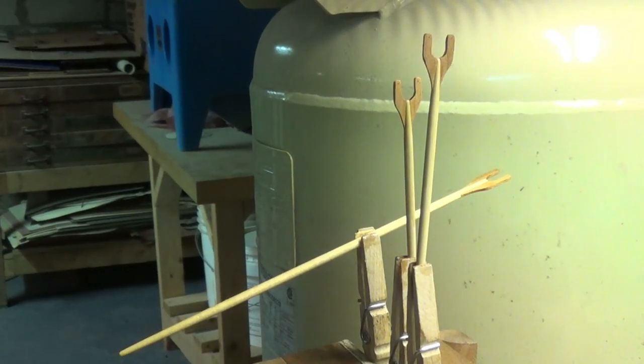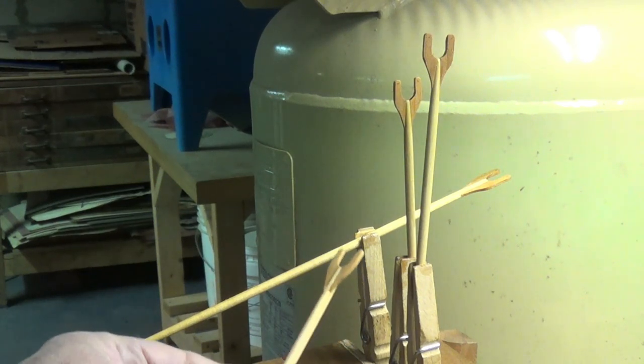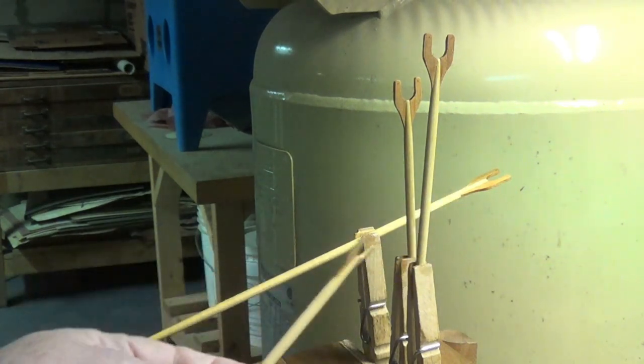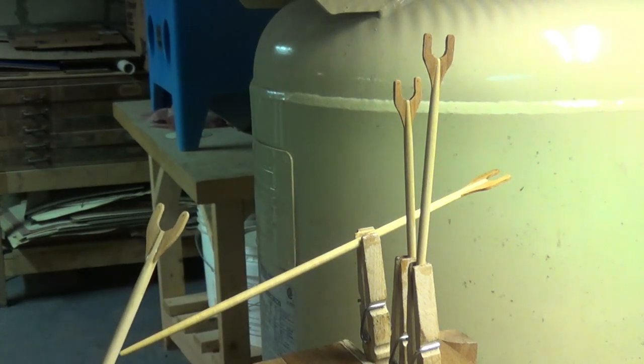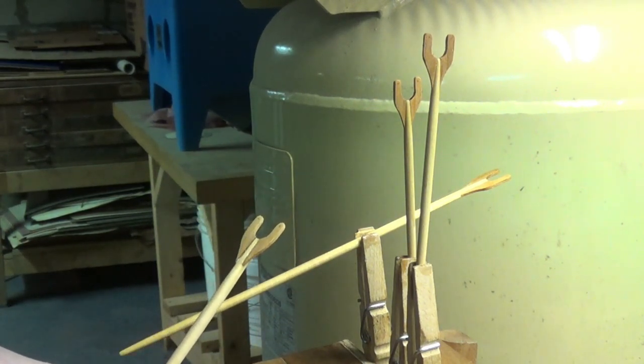At this point all four spars have been fabricated and have one coat of wipe-on poly. So next we'll start looking at putting the iron bands on.